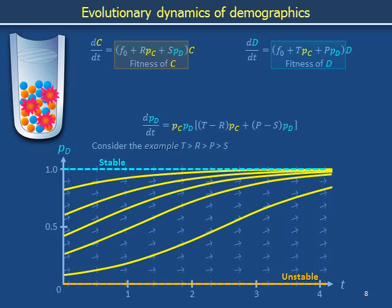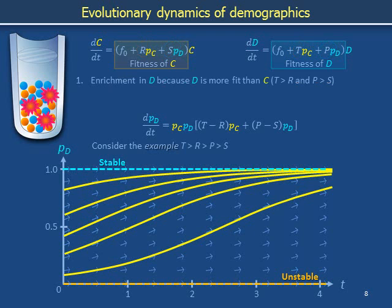First, we compare the fitness of the copper subpopulation to the fitness of the denim subpopulation. Both fitnesses include a coefficient attached to PC. Because T is greater than R, the product T times PC in the fitness of the denim cells is larger than the product R times PC in the fitness of the copper cells. Both fitnesses also include a coefficient attached to PD. Because P is greater than S, the product P times PD in the fitness of the denim cells is larger than the product S times PD in the fitness of the copper cells. Together, the statements T is greater than R and P is greater than S imply that the fitness of the denim cells is greater than the fitness of the copper cells. Thus, it makes sense that a heterogeneous mixture of copper and denim cells becomes increasingly enriched in denim cells over time.